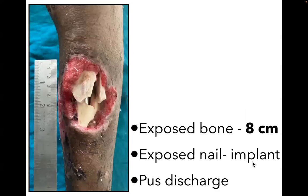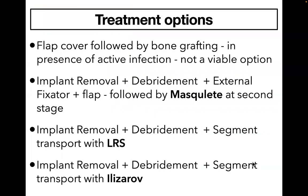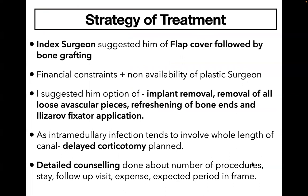Closer clinical examination shows around 8 cm of exposed bone with exposed nail and pus discharge. The index surgeon had suggested flap cover followed by bone graft, but in the presence of infection this is not a viable option. One can opt for the Masquelet technique or segment transport with Ilizarov or LRS. Due to financial constraints and unavailability of a plastic surgeon, the patient consulted me.